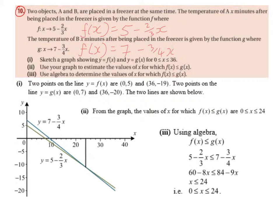Alternatively, we can substitute in some x values to find y values, generate a few coordinates, and join them together. Two points on the line y equals f of x: the first is (0, 5). Substituting 0 into f of x gives 5 minus 2 over 3 multiplied by 0, which equals 5. The second point is (36, -19). Substituting 36 gives 5 minus 2 over 3 multiplied by 36, which equals minus 19. Ideally we want three points so we can verify they line up correctly.